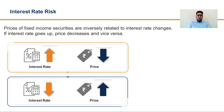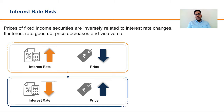How does it impact? Basically there is an inverse co-relationship between the interest rate and the price of the instrument. That means when the interest rate moves up, the price of the bond or instrument comes down. And when the interest rate moves down, the price of the instrument goes up. To better understand it, let's take an example.